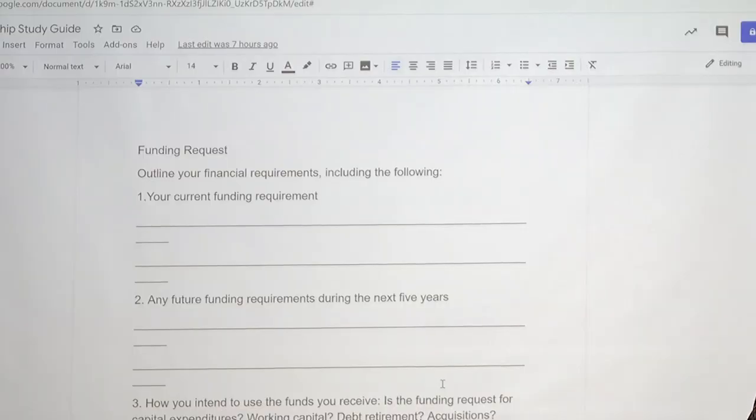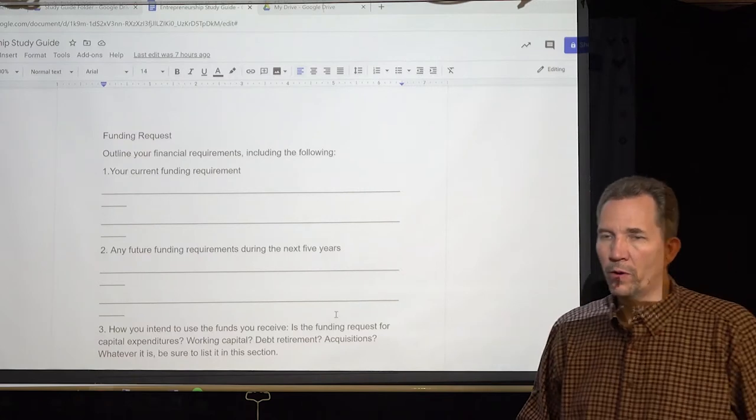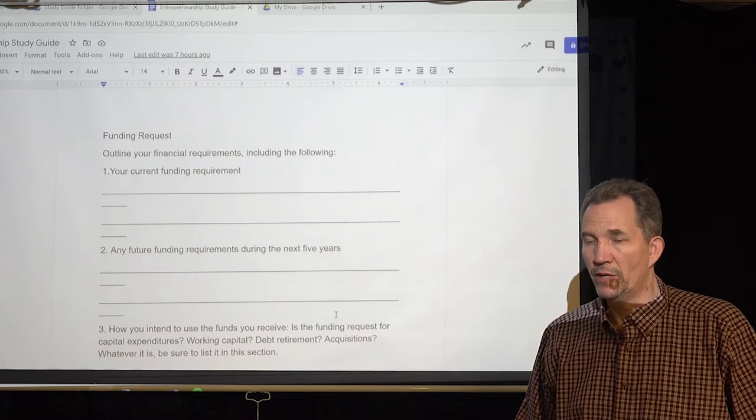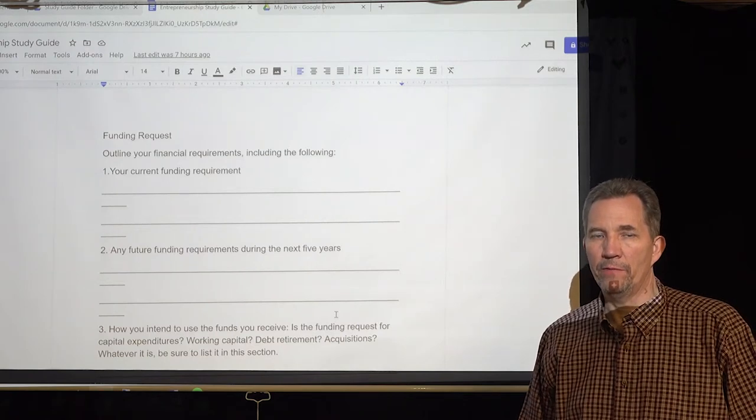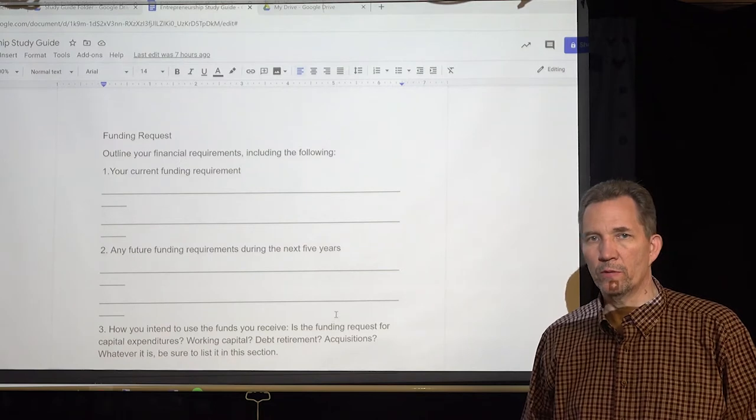It says here, outline your financial requirements, including the following, your current funding requirement. So if you're already in the business of doing something, what are the current funds that you need? And maybe you're saying, well, I am actually making a profit and this is how much money I spend to get the product out the door or the service.